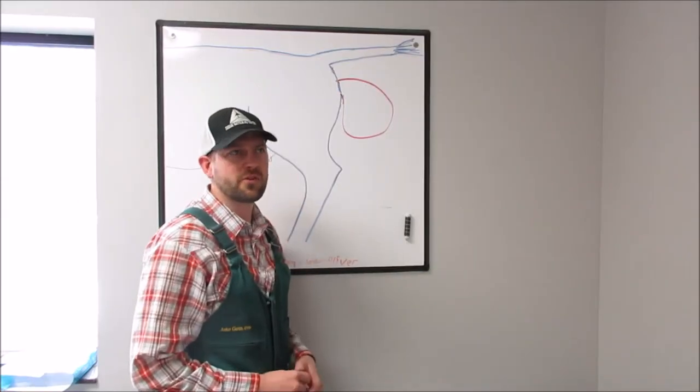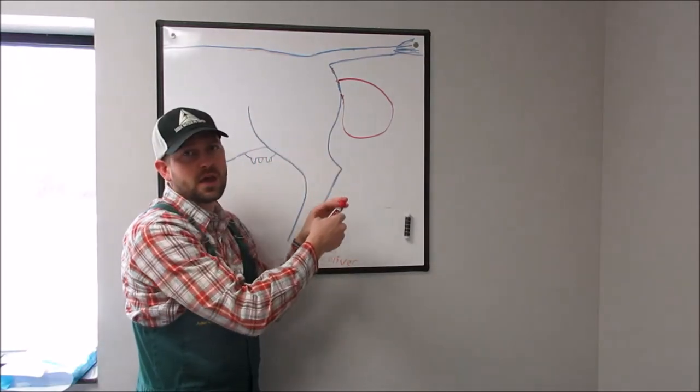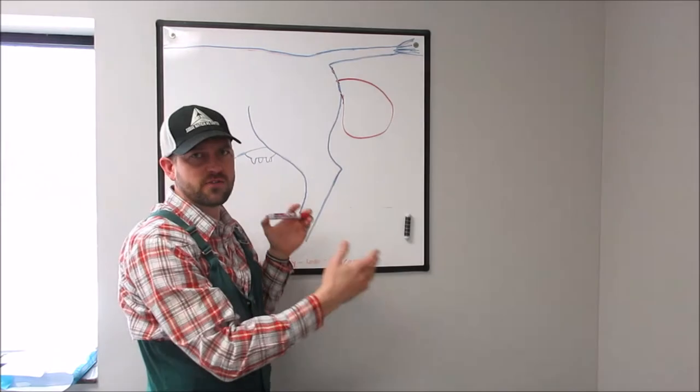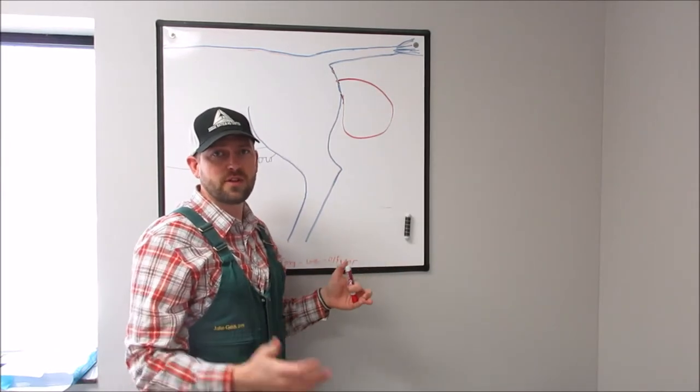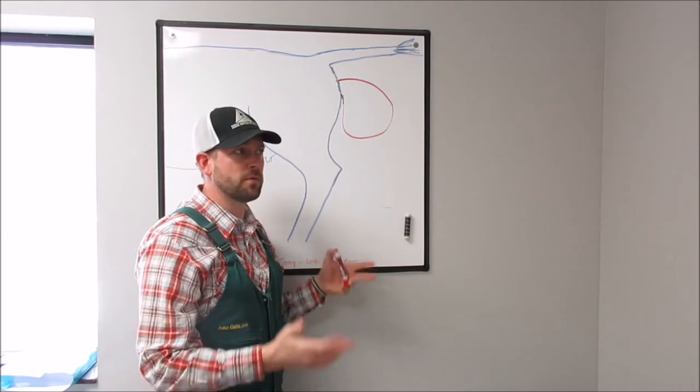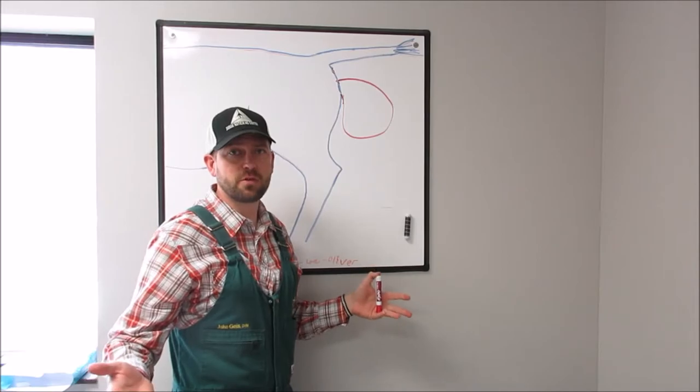Our second type of prolapse is the vaginal prolapse. The vaginal prolapse comes out of the vulva of the cow, and is typically somewhere in the size of a volleyball to basketball in size. It can occur at any point within the cow's production cycle, so it can be before calving, or it could be after calving, or it could be in a heifer that wasn't even bred in the first place.